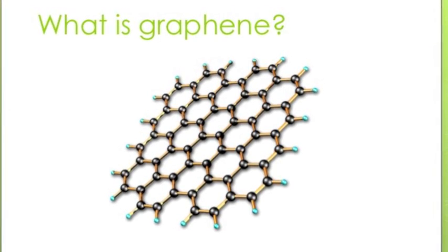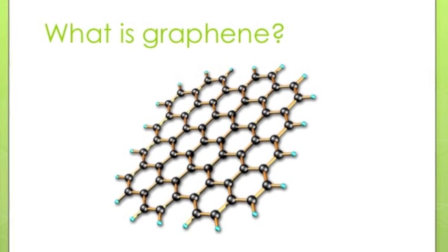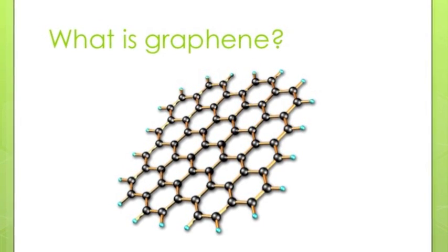Graphene is a substance comprised of pure carbon formed into a thin layered honeycomb lattice, usually only a couple of layers thick.